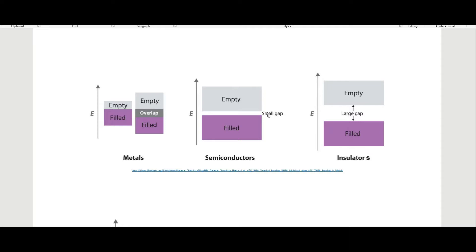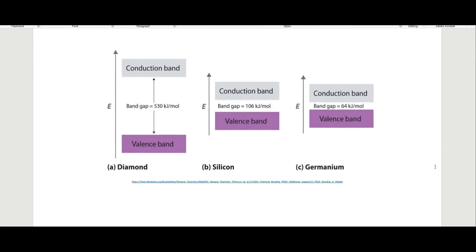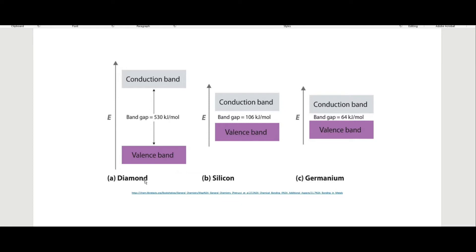It doesn't take much energy at all for an electron to move from the valence band up to the conduction band in a metal. A semiconductor has a small gap, so a little more energy is needed to move past the band gap. An insulator has a large band gap, so even applying a large potential won't move electrons from the valence band up to the conduction band.